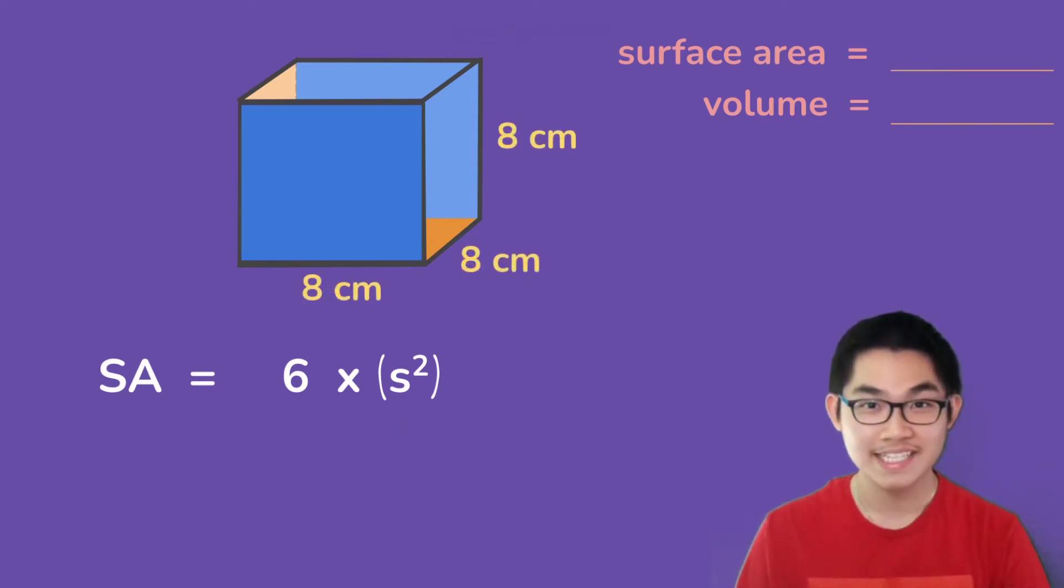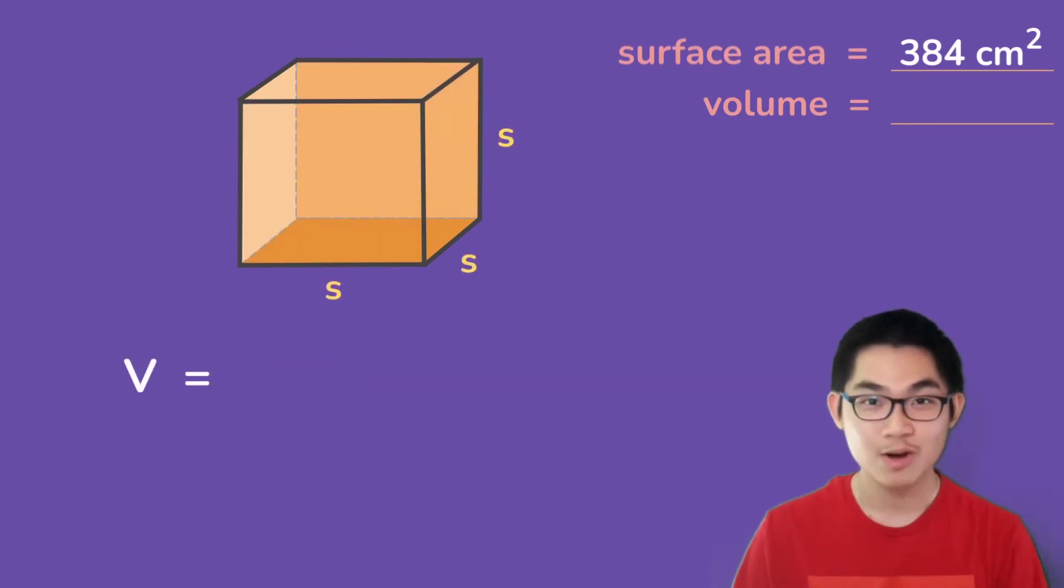So let's say the length, the width, and the height are eight centimeters. What is the surface area of this cube? Well, we know that eight is s, and eight to the power of two is 64. Now 64 times 6 is equal to 384 centimeters squared, and so the surface area is 384 centimeters squared.